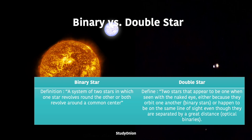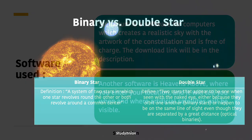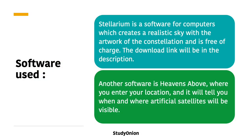Two stars may appear as one either because they are a binary star and orbit one another, or because they happen to be on the same line of sight even though they are separated by a great distance. These are called optical binaries.